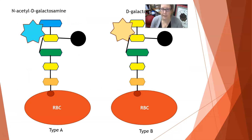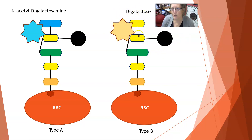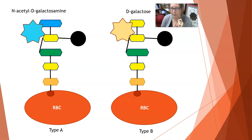Illustrated, we have the precursor H substance, and then the type A enzyme adds N-acetyl-D-galactosamine as the terminal sugar — that makes type A. The type B enzyme adds D-galactose to the H substance — that makes type B. I hope this is helpful. I'm going to build another video on A subtypes — I'll try to get it done pretty quickly, hopefully next week.